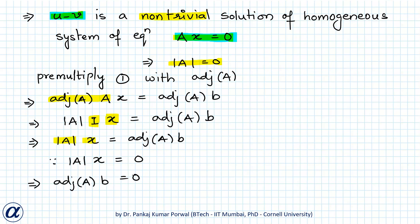So for our given non-homogeneous equation AX equals B, we have shown that determinant of A is 0 and adjoint of A times B is also equal to 0. Therefore, AX equals B has infinite solutions.